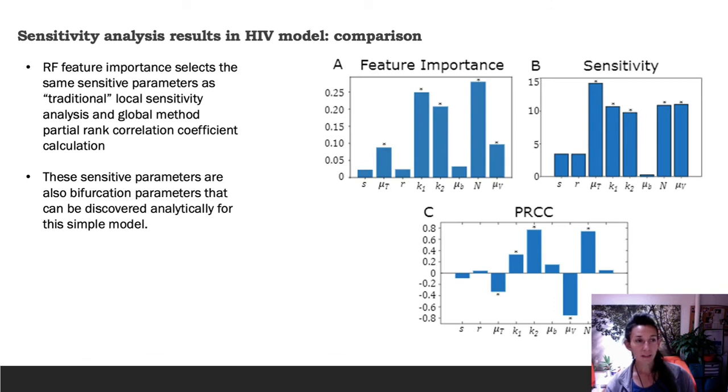Results-wise, the random forest feature importance in this case selects the same sensitive parameters as traditional local sensitivity analysis done using a system of partial differential equations, and the global method that also computes partial rank correlation coefficient. These sensitive parameters are also the bifurcation parameters that were discovered originally analytically for this simple model. This just shows a comparison of how the same parameters are chosen as sensitive across a variety of methods. It's a verification step.